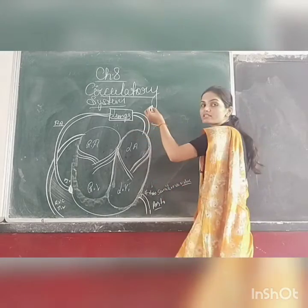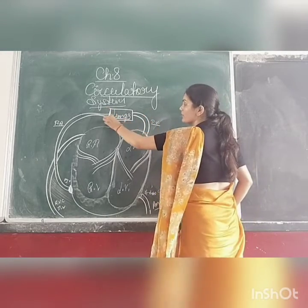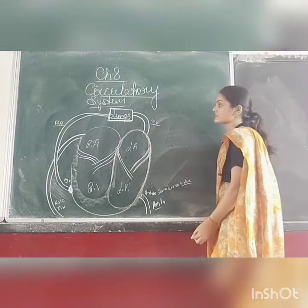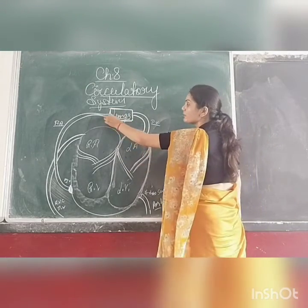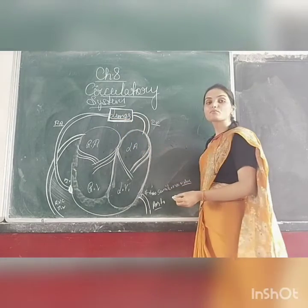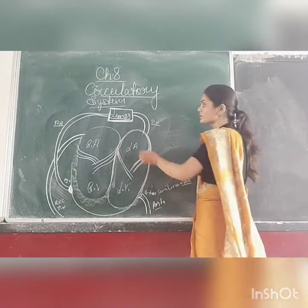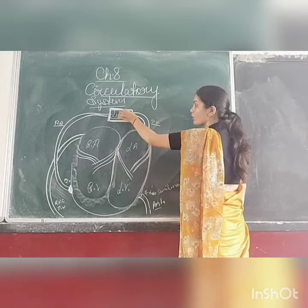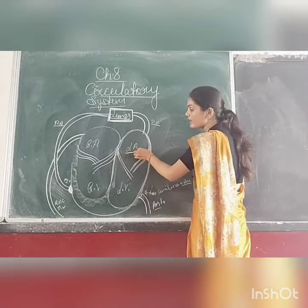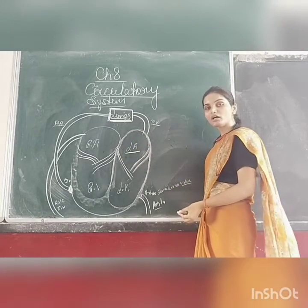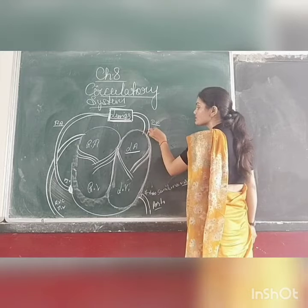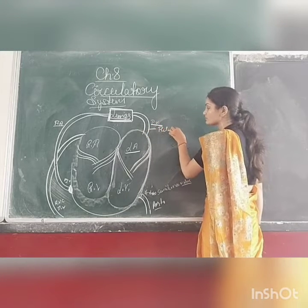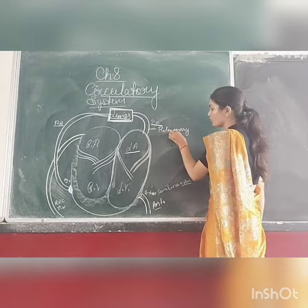We will start from here. When the blood comes from the lungs, it becomes oxygenated. So oxygenated blood comes from the lungs and goes inside the left atrium of the heart. The vessel responsible for this is the pulmonary veins.